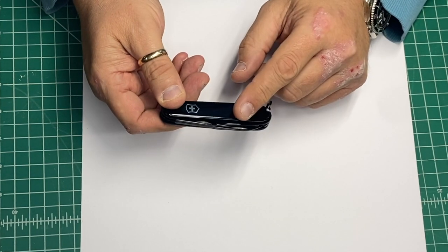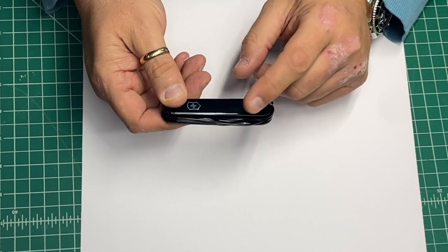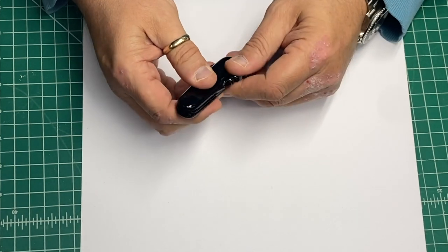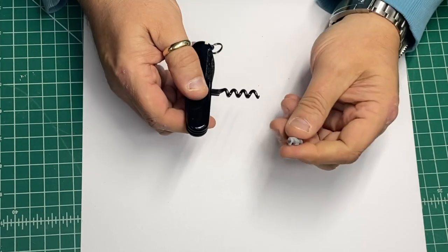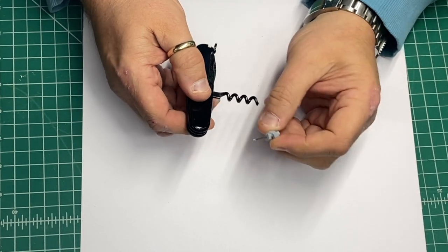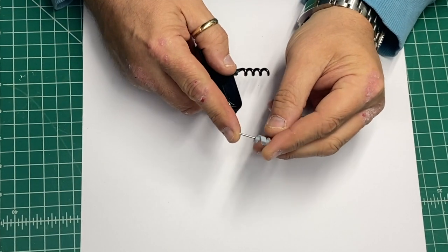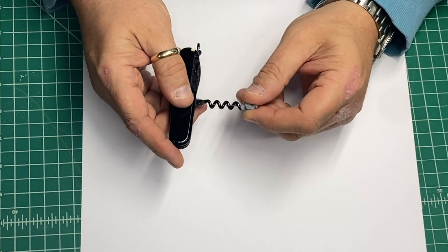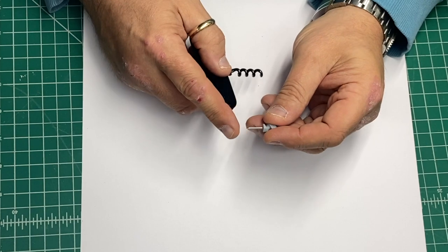Now, this knife won the Red Dot Award for 2021, and interestingly, when I was looking for the replacement screwdrivers, I found there's also a kit, and it's the same, installs the same way on the corkscrew. There's actually one that's not a screwdriver, it's actually a fire steel.